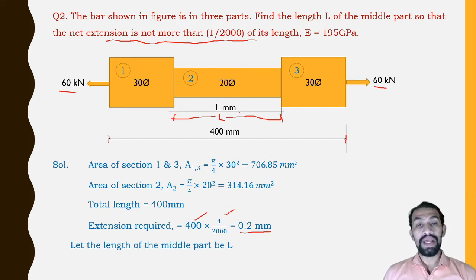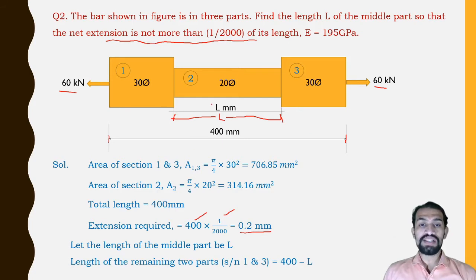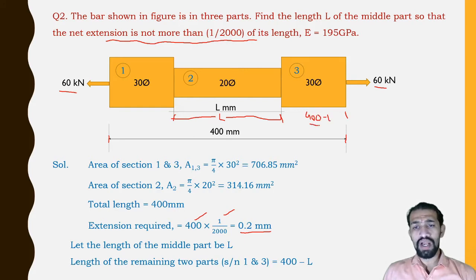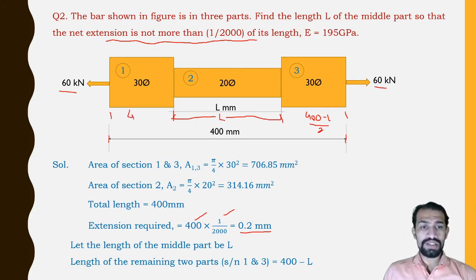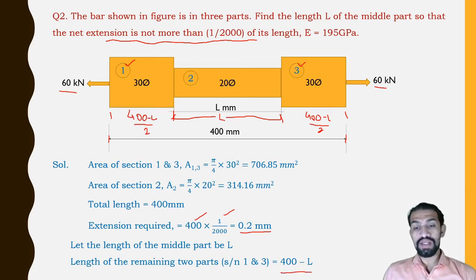The length of the remaining parts (sections 1 and 3 together) = 400 − L. Since sections 1 and 3 have the same diameter, force, and dimensions, they are considered together as (400 − L). There is no change in force or diameter between sections 1 and 3, so they are taken as one combined section.